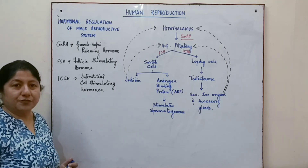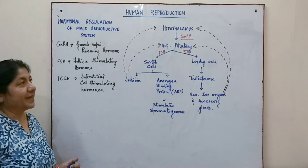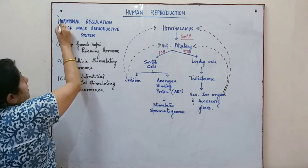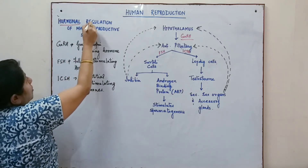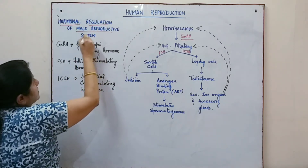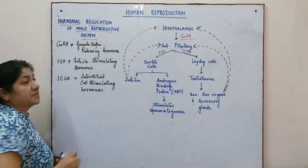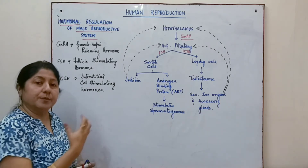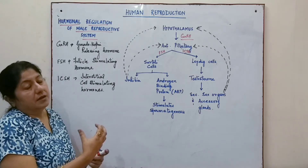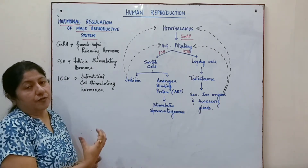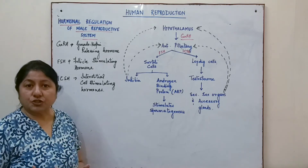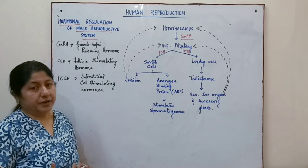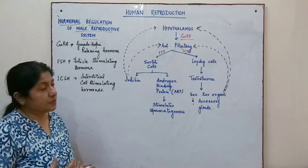In this part of the video, we'll be trying to understand the hormonal regulation of the male reproductive system — what hormones are playing an important role in the release of sperm and the release of testosterone, which is required for the production of sperm.